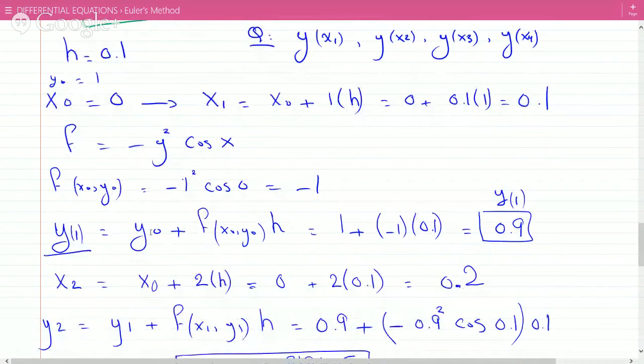For x2, take the original x0 and add two step sizes: 0 + 2(0.1), so x2 = 0.2.